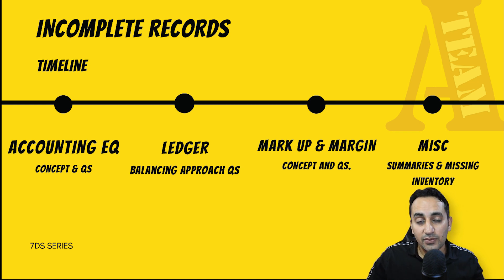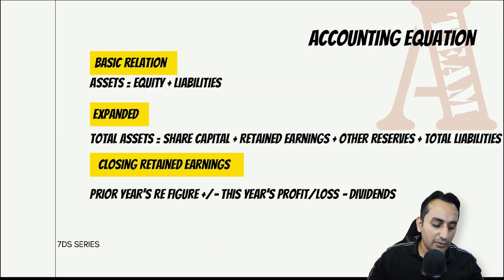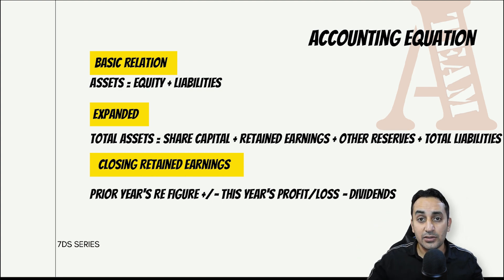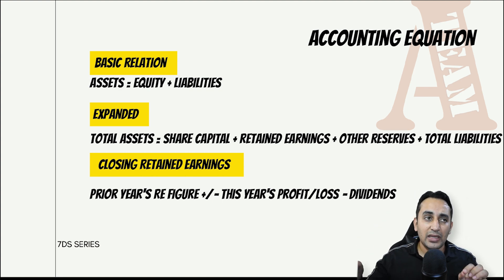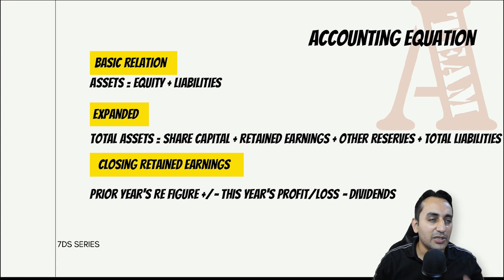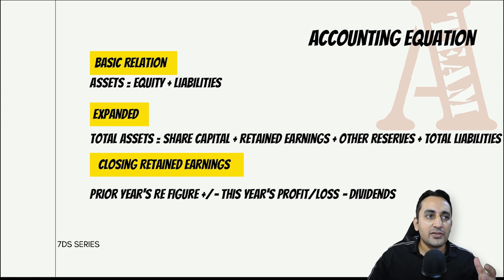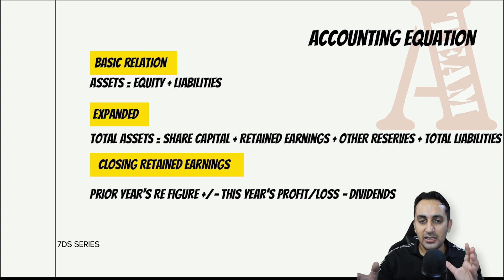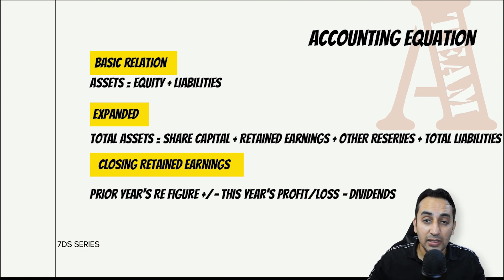Accounting equation में basic equation हमें शुरू से पता है: Assets = Capital + Liability। Capital को अब हम equity कहते हैं। इस basic relation में दो items हमारे पास हों तो तीसरा निकालना मुश्किल नहीं है।